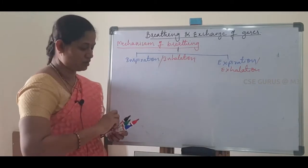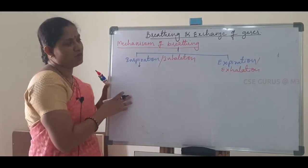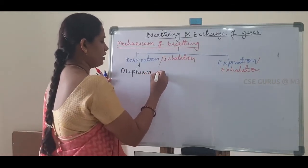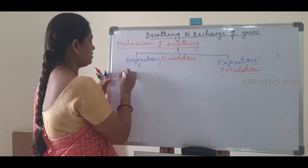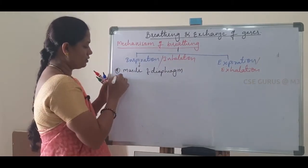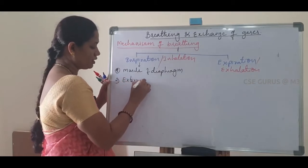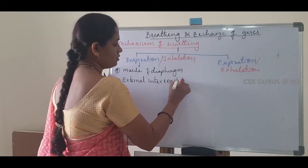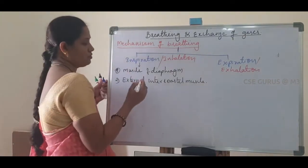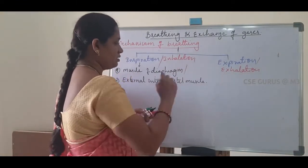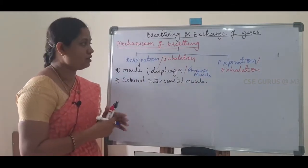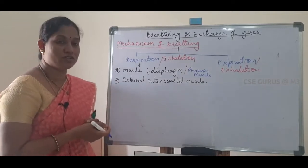During the breathing mechanism, two types of muscles play a very important role. The first is the muscles of the diaphragm, also called phrenic muscles. The second is the external intercostal muscles. These two types of muscles play a very important role in the breathing mechanism.